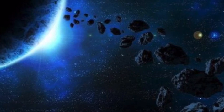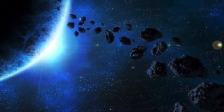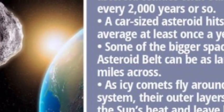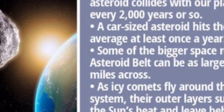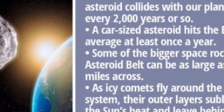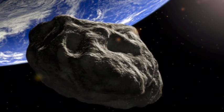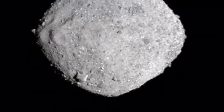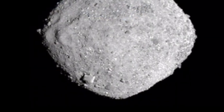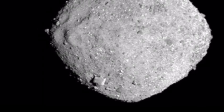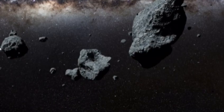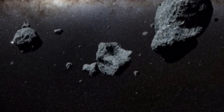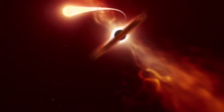The second asteroid, known as 2020 TO2, is somewhat smaller, measuring up to 30 meters in diameter. That space rock will pass much closer to our planet, coming within 758,000 miles of Earth at 11:08 AM ET, just under an hour after the flyby of 2020 TD. This means 2020 TO2 will pass just over three times the Earth-Moon distance while traveling at roughly 28,600 miles per hour.